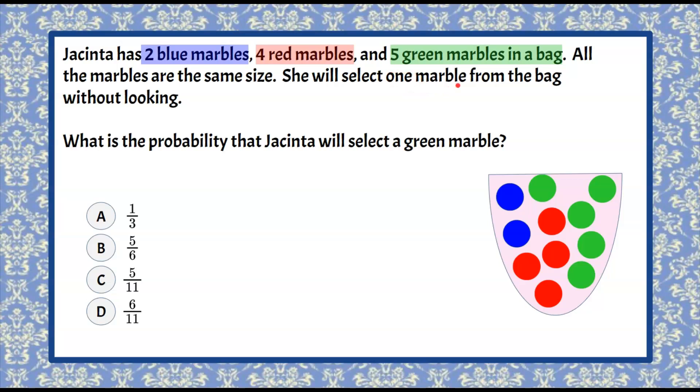She's going to select one marble from the bag without looking, so randomly. And we're asked what is the probability that she's going to pick a green marble?